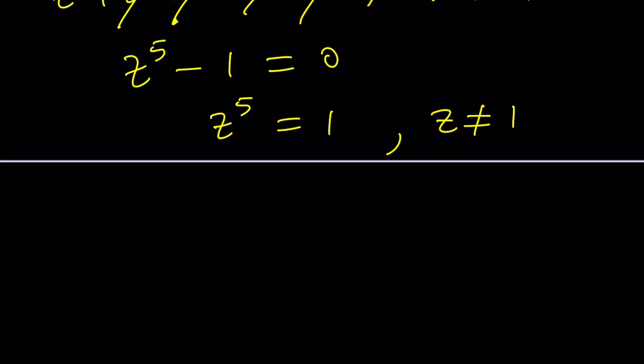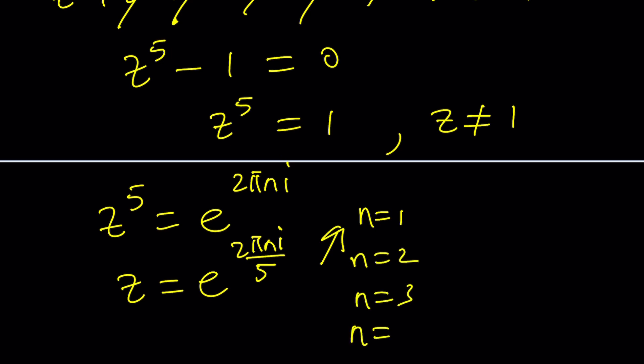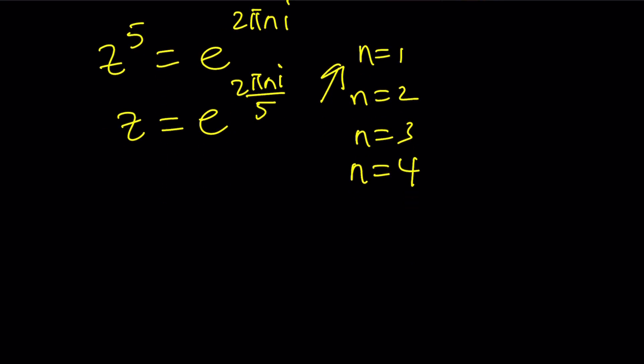In other words, if z to the fifth is unity, that is e to the power 2 pi n i, when you divide both sides by 5, like raise both sides to the power 1 fifth, you get the fifth roots of unity. For different values, don't use n equals 0, use n equals 1, 2, 3, 4, because n equals 0 gives you z equals 1 and that's not allowed. For example, I could call this z sub 1, and write it as e to the power 2 pi i over 5. From Euler's formula, this can be written as cosine 2 pi over 5 plus i times sine 2 pi over 5.